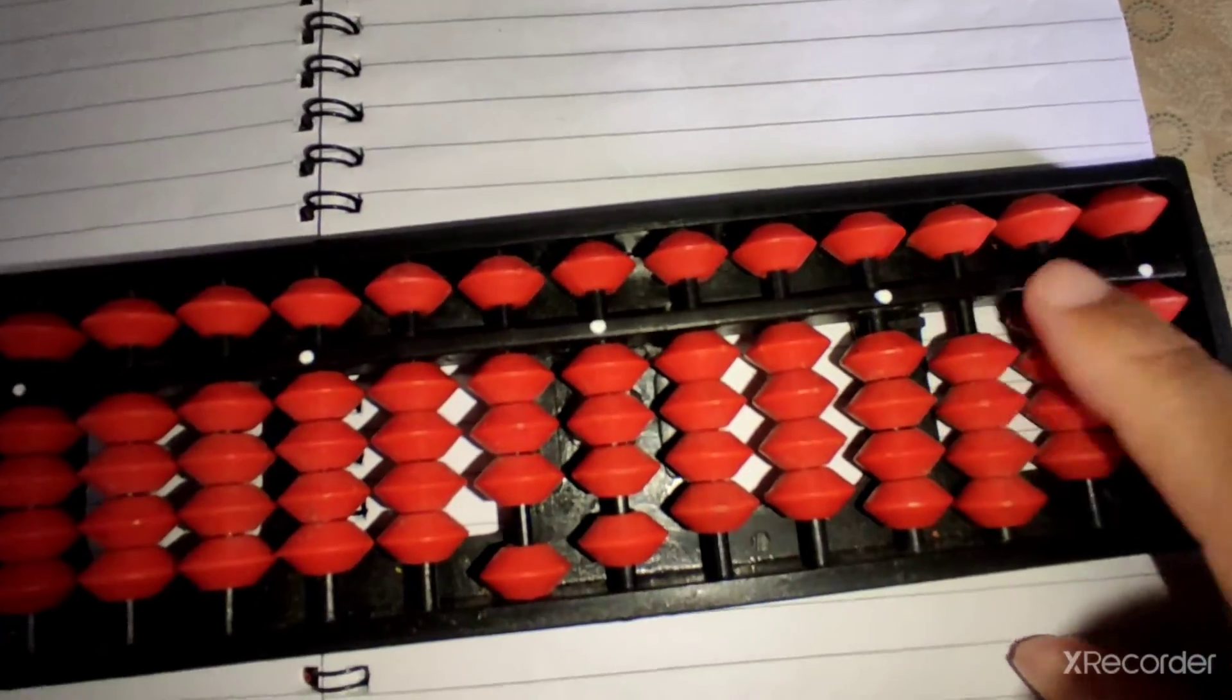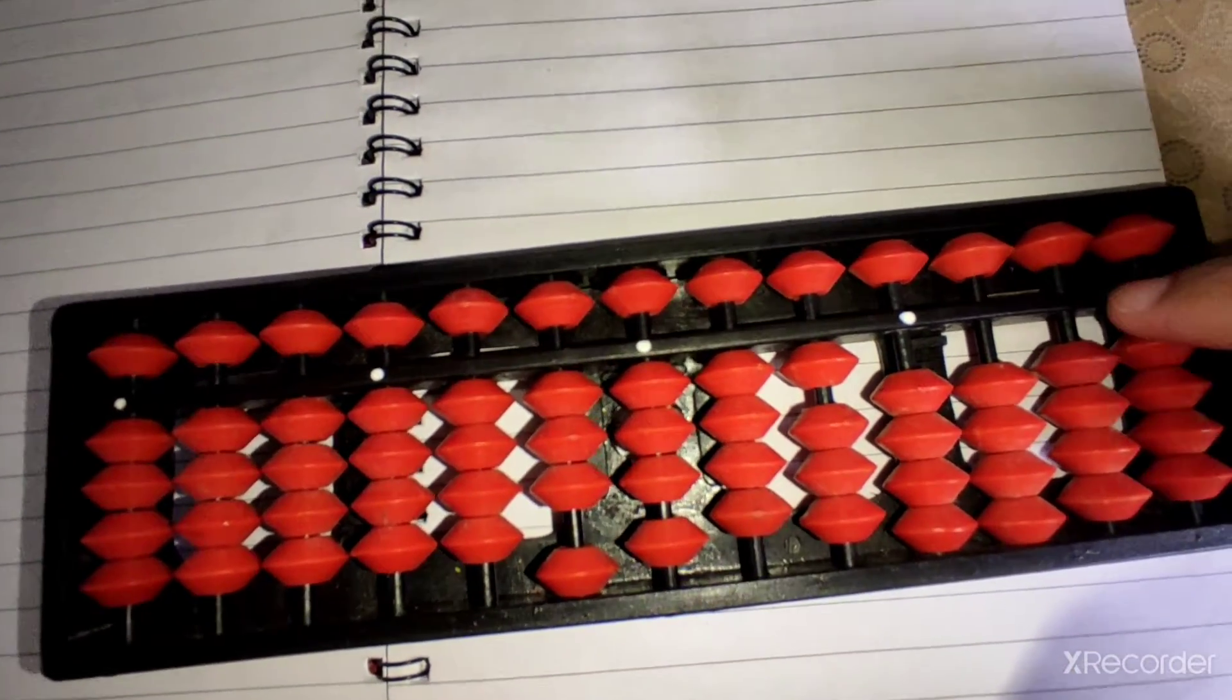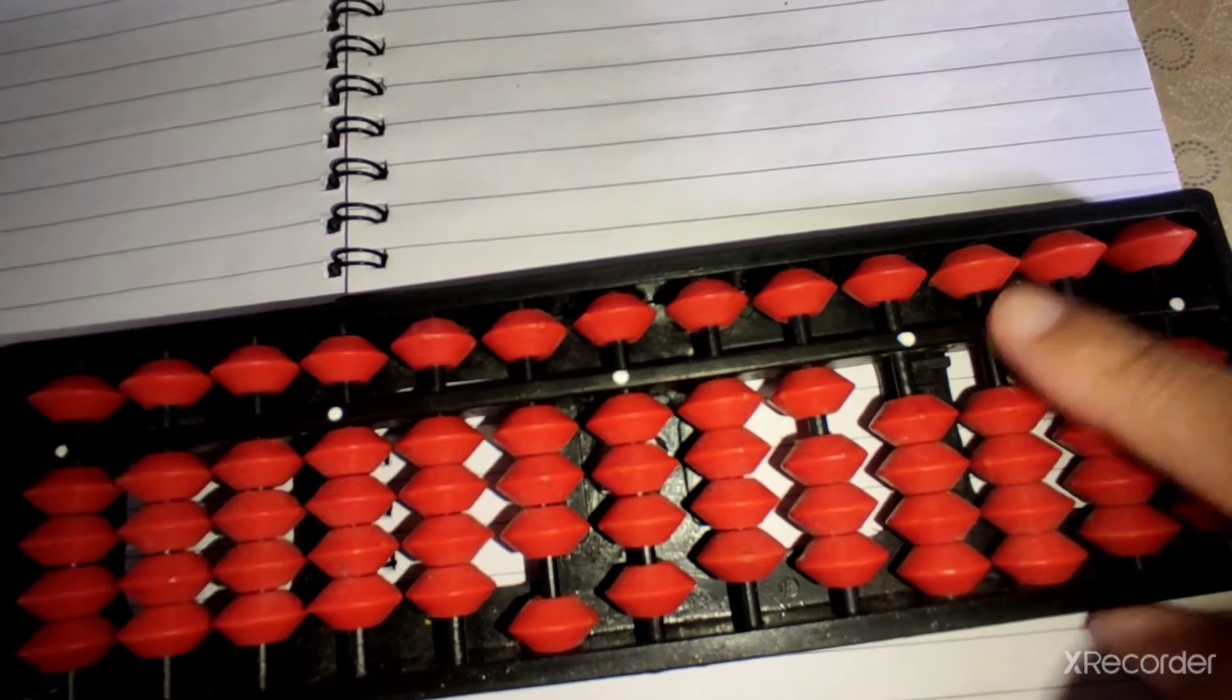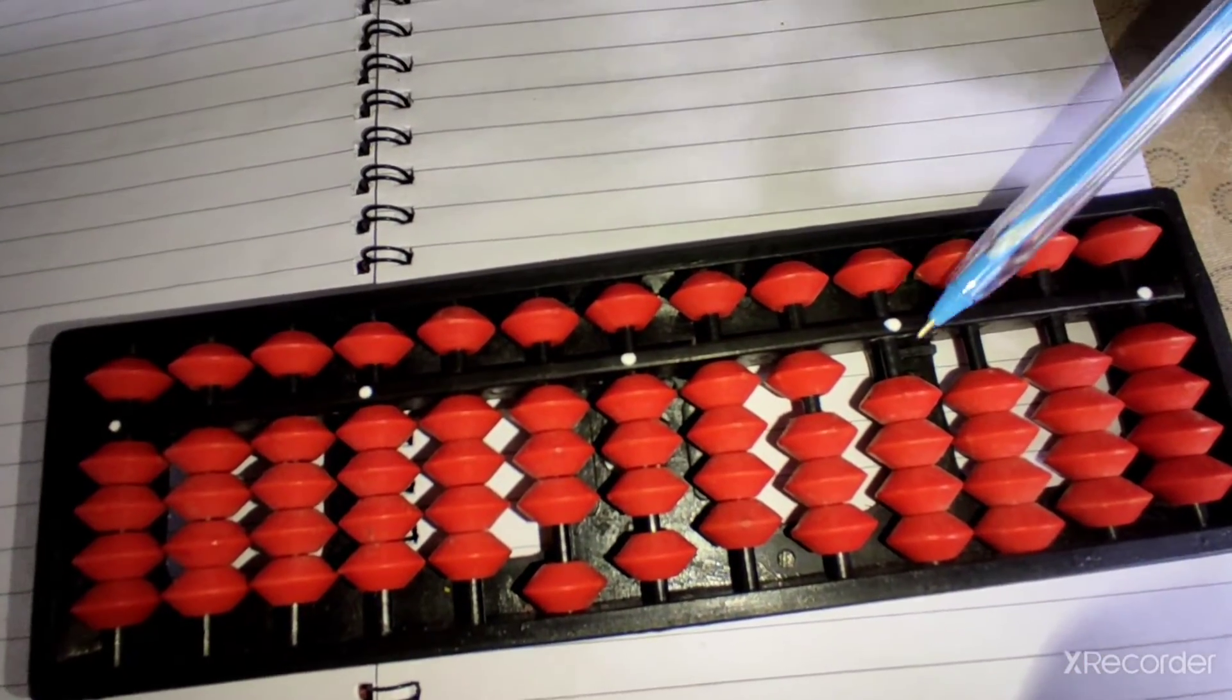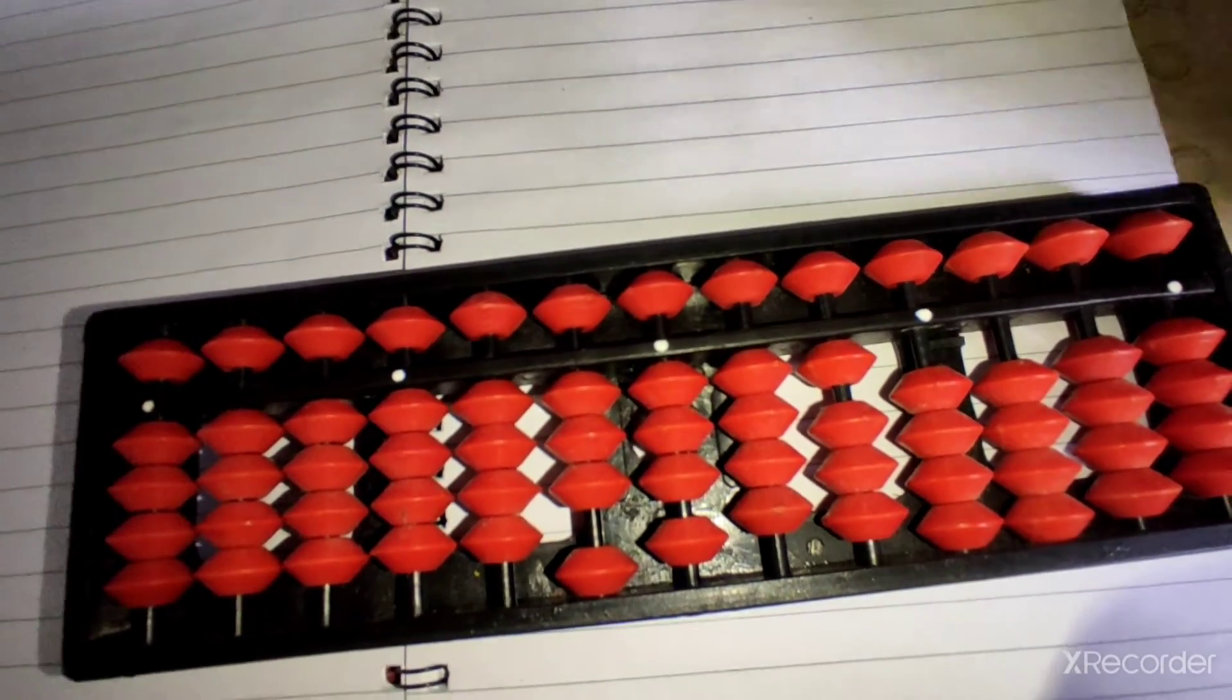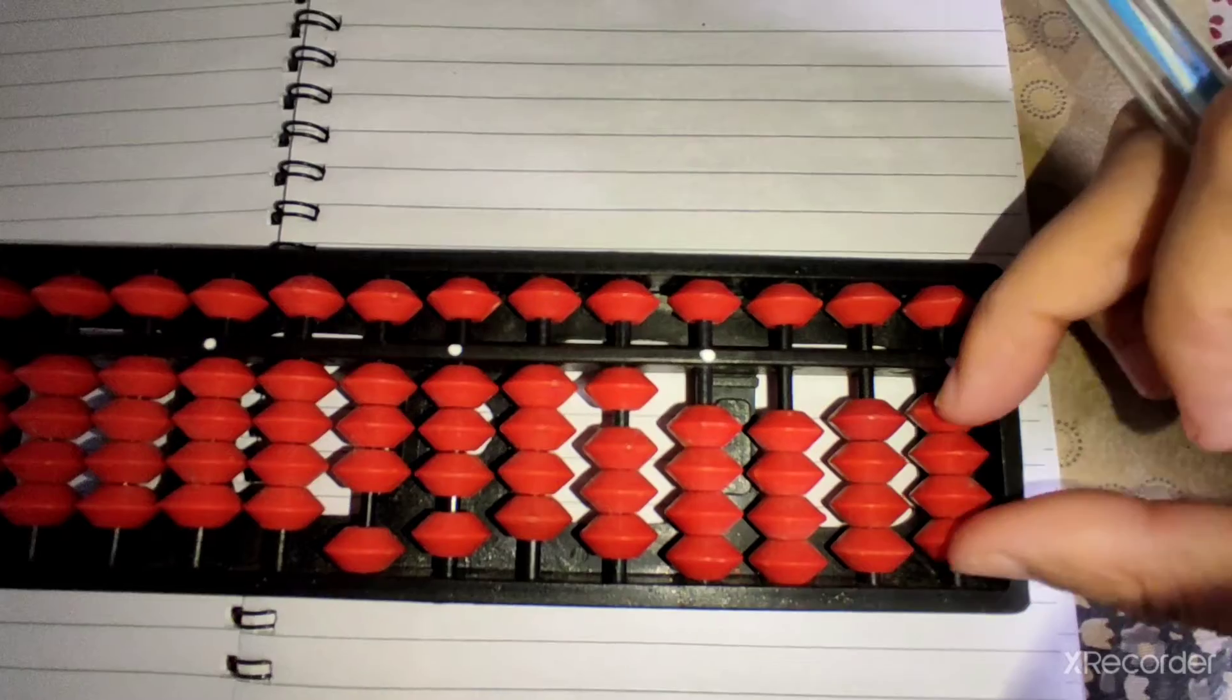The middle line, the line which separates the beads into two parts, this line is called the unit bar or answer line. The white color dots which are present in the answer line are called unit dots, and these are beads.